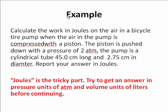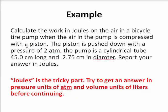Here is an example problem. This example problem introduces some of the mathematical issues that may arise in thinking about work. Calculate the work in joules on the air in a bicycle tire pump when the air in the pump is compressed with a piston. The piston is pushed down with a pressure of 2 atmospheres, and the pump is a cylindrical tube 45 centimeters long and 2.75 centimeters in diameter. Report your answer in joules. The trickiest part of this problem is actually the joules part. First, try to get an answer with pressure units of atmospheres and volume units of liters before continuing with the presentation.